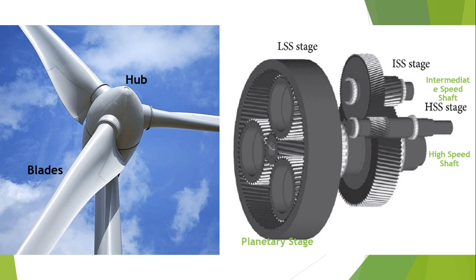The inspection method for high speed stage bearings is also effective for the intermediate speed stage bearings. However, this inspection may be more difficult because it is necessary to insert an endoscope beyond the high speed shaft. To ensure smooth entry of the endoscope, it can be inserted through a semi-flex guide tube.